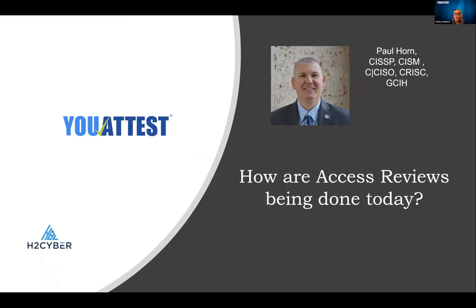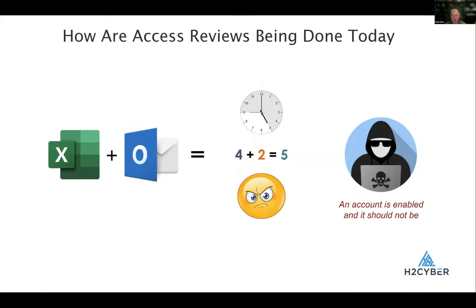Thank you, Paul. Now we're going to switch over to Paul Horn, and he's going to talk about how access reviews are being done today. Hello, everybody. My name is Paul Horn. What do I generally see in the security world? What I most commonly come across is that if an access review is done, it's normally being done via Excel. The one thing about Excel is there's no auditing or logging of who's modified the document. It's not like a Word document where you can put it in revision and maintain all the history.